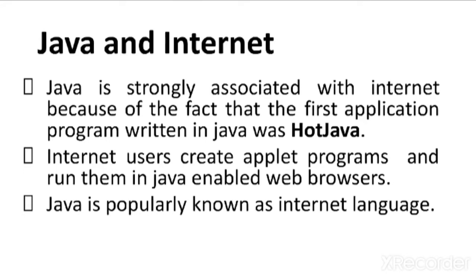Web pages are designed using HTML, which is Hypertext Markup Language. Suppose if we embed a Java code within a web page, normal web browsers cannot understand that Java code. Special web browsers are needed. Hot Java was the first web browser which could understand Java code. Small Java programs are called applets. Internet users create these applet programs and run them in Java-enabled web browsers across the internet. Nowadays, most web browsers are Java-enabled, meaning most web browsers can understand Java code.